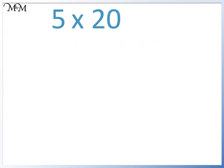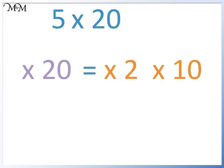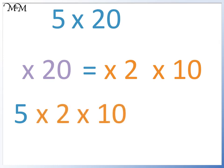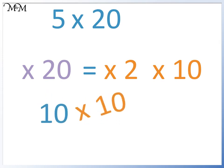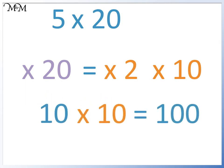Here we have 5 times 20. Multiplying by 20 is the same as multiplying by 2 and then by 10, because 10 times 2 equals 20. So we can change 5 times 20 to 5 times 2 times 10. 5 times 2 equals 10, and 10 times 10 equals 100. So 5 times 20 equals 100.